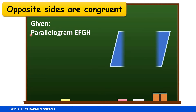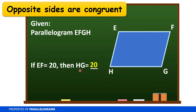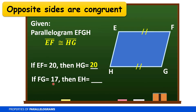Let's try to identify the missing measurement using the property that opposite sides of a parallelogram are congruent. Given parallelogram EFGH, if side EF is equal to 20, then side HG is 20, because EF and HG are opposite sides. Segment EF is congruent to segment HG. Also, if FG is equal to 17, then EH is equal to 17, because FG and EH are opposite sides.